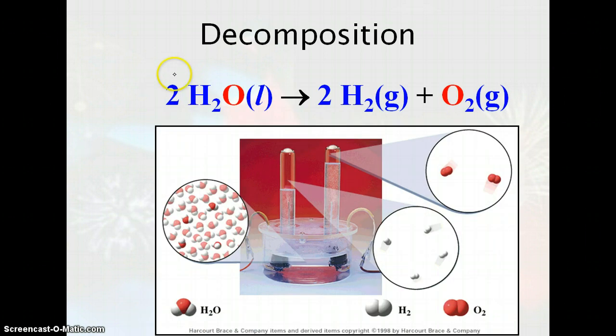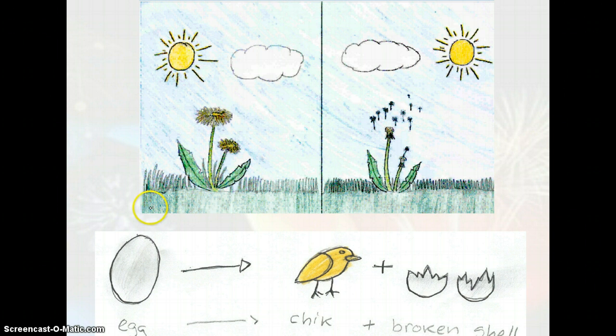An example of this would be water being decomposed into hydrogen and oxygen gas. Here are two other examples: the flower breaks down into many different pieces as it dies and decomposes. And the egg breaks into the broken shell and the chick, so it decomposes into simpler forms. Another example would be if a couple went to prom and then broke up at prom—starting out together, then breaking up into two simpler forms.